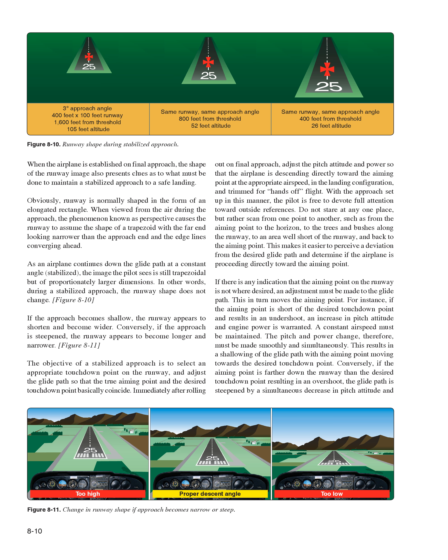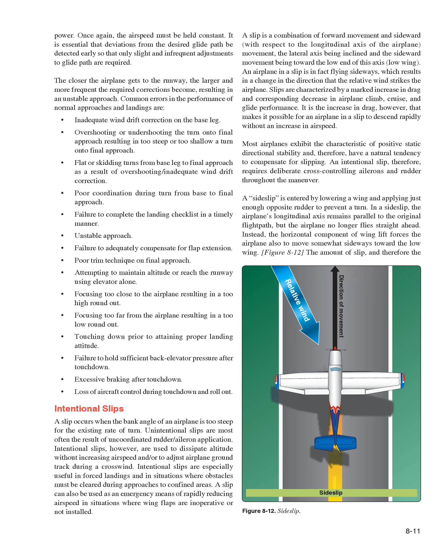If there is any indication that the aiming point is not where desired, an adjustment must be made to the glide path. If the aiming point is short of the desired touchdown point resulting in an undershoot, an increase in pitch attitude and engine power is warranted—pitch and power changes must be made smoothly and simultaneously while maintaining a constant airspeed, shallowing the glide path. Conversely, if the aiming point is farther down the runway resulting in an overshoot, the glide path is steepened by a simultaneous decrease in pitch attitude and power. It is essential that deviations from the desired glide path be detected early so that only slight and infrequent adjustments are required. The closer the airplane gets to the runway, the larger and more frequent the required corrections become, resulting in an unstable approach.